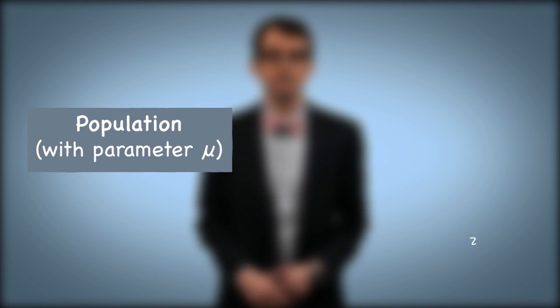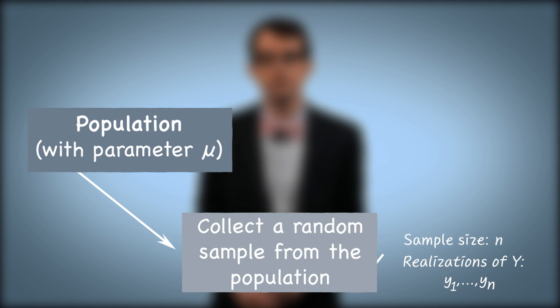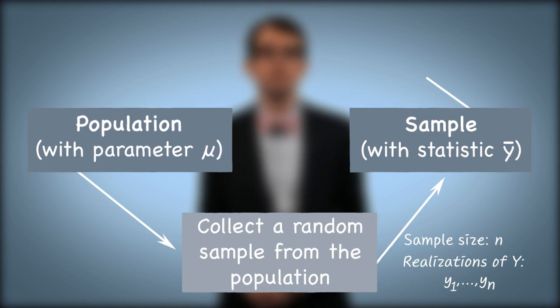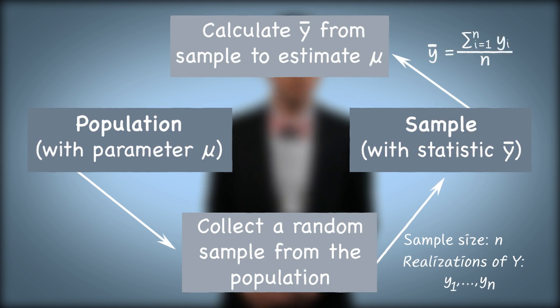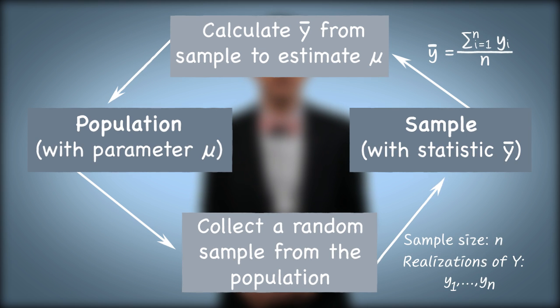All we can do is collect a sample from the population, and do our best to estimate the population parameter of interest, mean mu. We collect a sample of size n consisting of realizations of y, y1 through yn, and calculate the mean of the sample, y-bar, which is the sum of the observations y sub i for i equals 1 to n, divided by n. We are interested in an estimate of the population parameter mu, and our best estimator for mu is the sample statistic, y-bar.